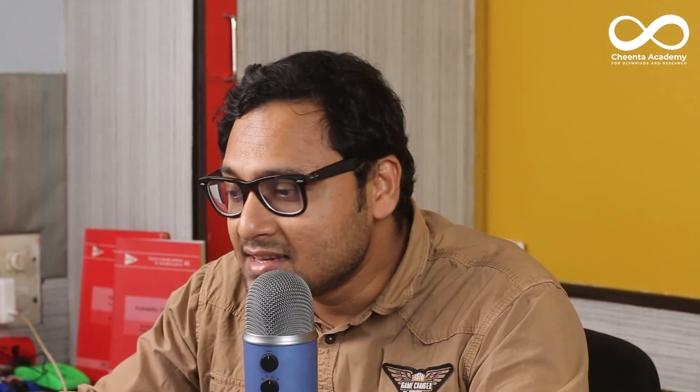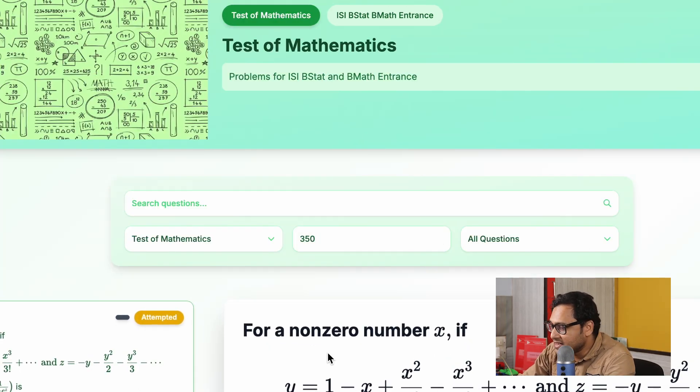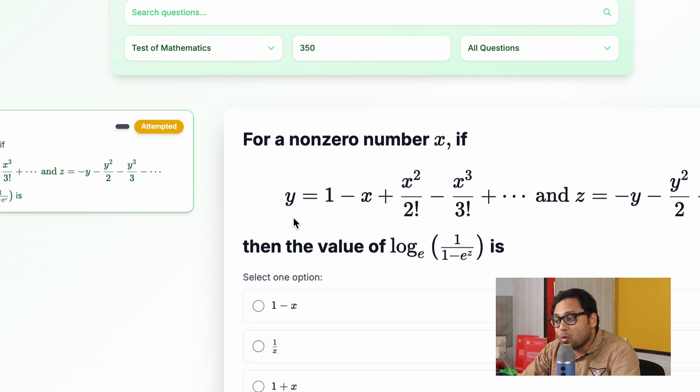So I'll go to the problem bank in our Panini 8 software, you can check a link in the description for that. All the problems, objective problems from Test of Mathematics are here with hints and solutions. I'll just go to problem number 350, and you can read the problem. It says that y equals 1 minus x plus x squared by 2 factorial minus x cubed by 3 factorial and so on.